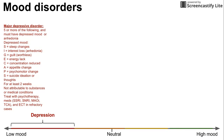Major depressive disorder is an organic brain disorder. Treatment includes psychotherapy and medications. Classes of medications used include SSRIs (selective serotonin reuptake inhibitors), SNRIs (serotonin norepinephrine reuptake inhibitors), MAO inhibitors (monoamine oxidase inhibitors), and TCAs (tricyclic antidepressants). We'll talk more about those drugs in another video. ECT, or electroconvulsive therapy, is also used in refractory cases of major depressive disorder.